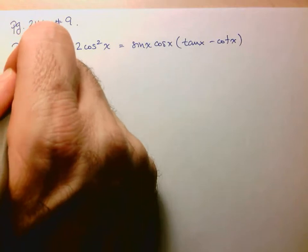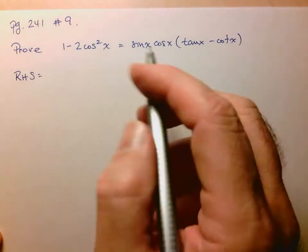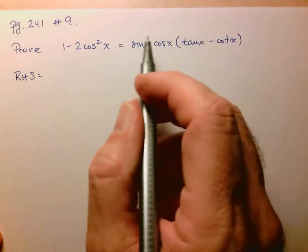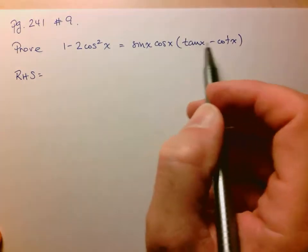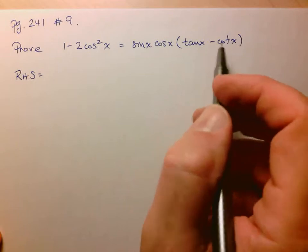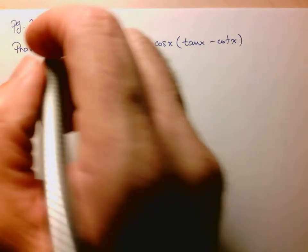But let's start with the right-hand side. So here I see everything else is in terms of sines and cosines. So first thing I'm going to do is change tan and cotangent into sines and cosines.